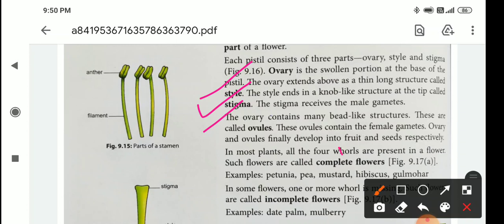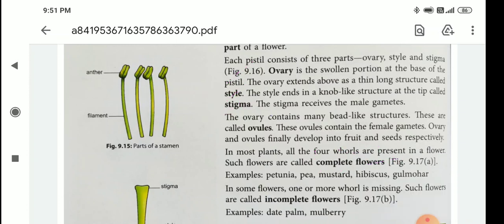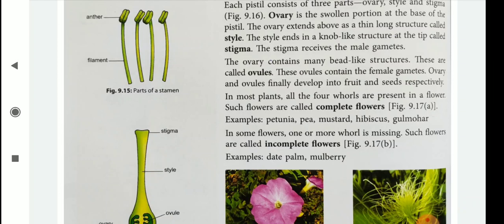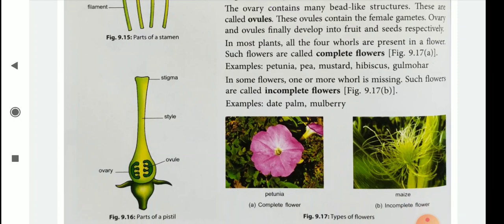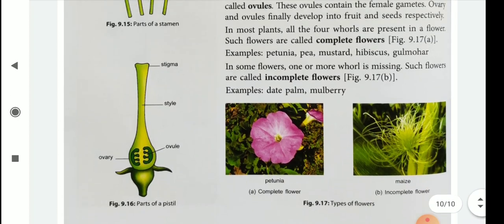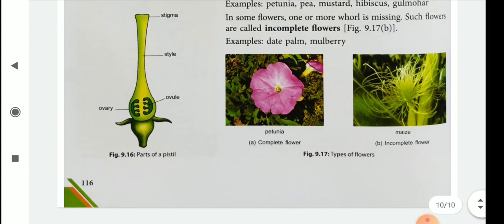In most plants, all four whorls are present in a flower. Such flowers are called complete flowers — for example, pea, mustard, and hibiscus. Flowers that do not have all the whorls are known as incomplete flowers. Dead nettle and mulberry are examples of incomplete flowers.